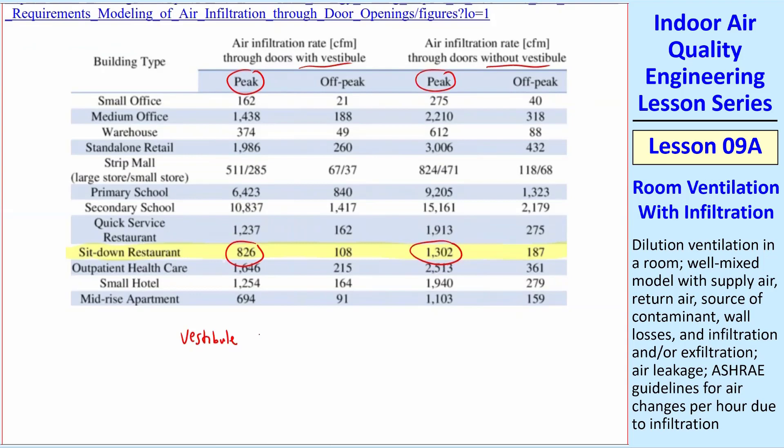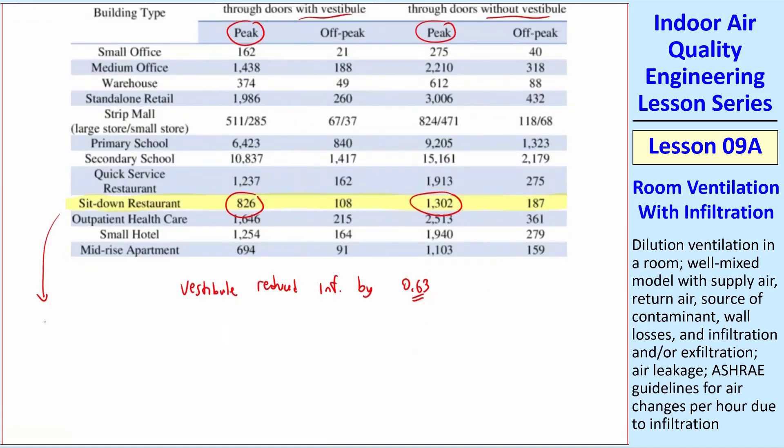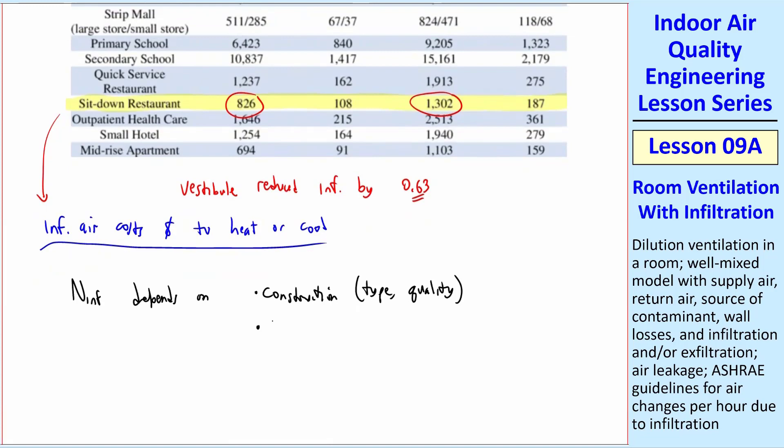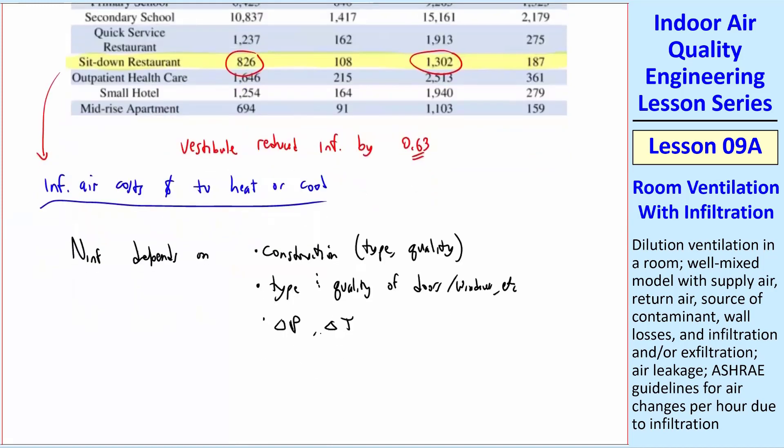Every infiltrated air costs money to heat or cool, depending on if it's winter or summer. And so you want to try to avoid infiltration. The bottom line is that N infiltration depends on the construction, not just the type of construction, but the quality of construction, the type and quality of the doors themselves, doors, windows, along with Delta P, Delta T, as we just talked about, and a whole bunch of other things.